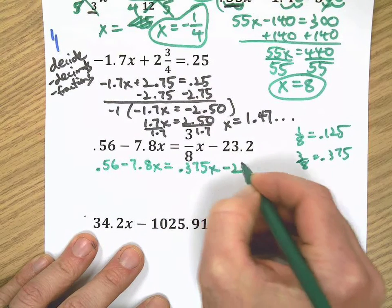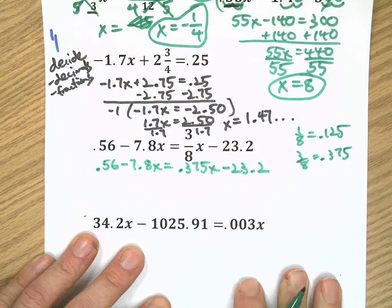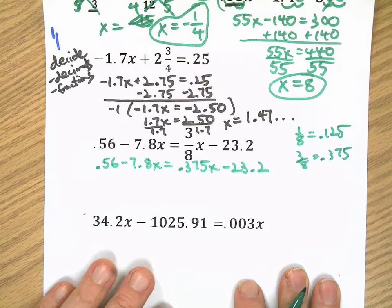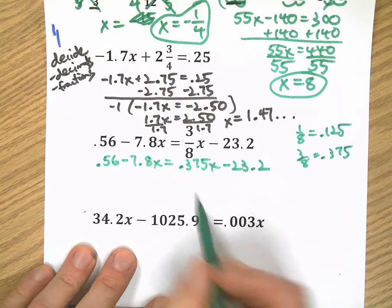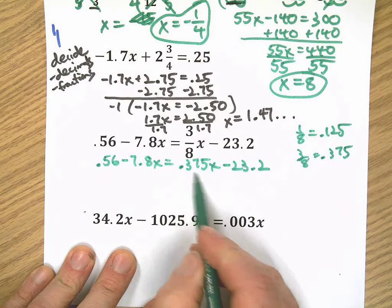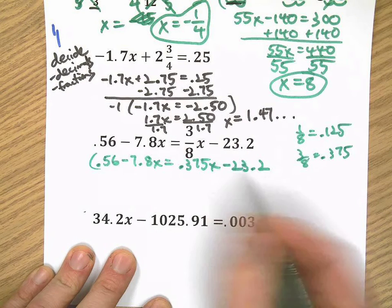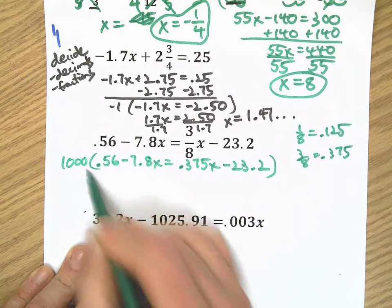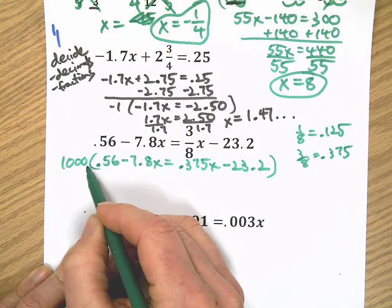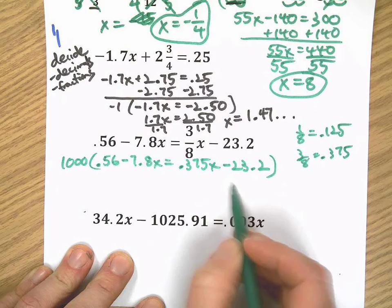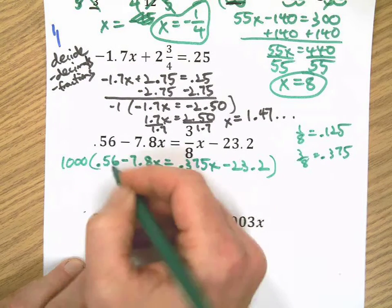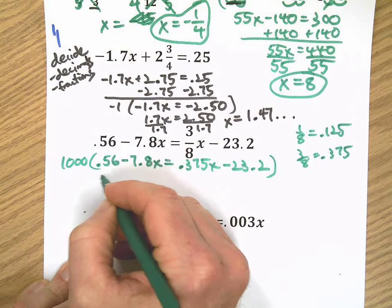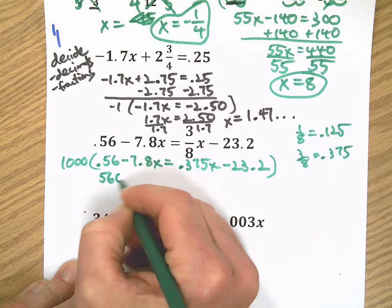Now I'm going to use the strategy from up above. The greatest number of decimal places I see here is three, so I'm going to multiply by one thousand because there's three decimal places there, which will counterbalance or get rid of that. So move the decimal three spots everywhere.